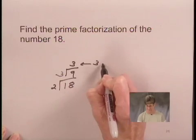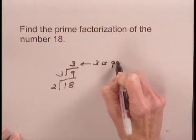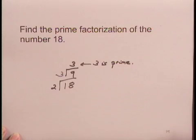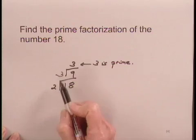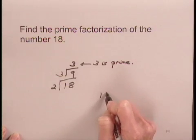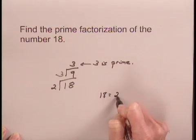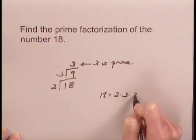So from this series of divisions we can read the prime factors of the number 18. They are 2, 3, and 3. So the prime factorization of 18 is 2 times 3 times 3.